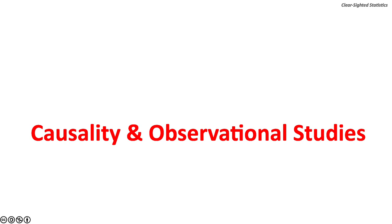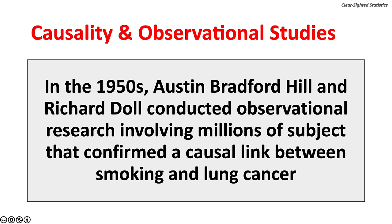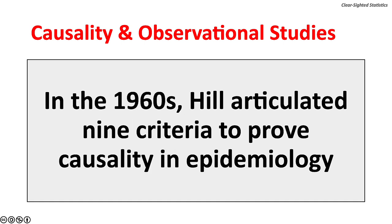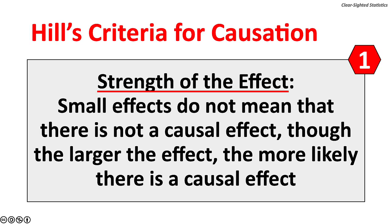In the 1950s, Austin Bradford Hill and Richard Doll conducted observational research involving millions of subjects that confirmed a causal link between smoking and lung cancer. In the 1960s, Hill articulated nine criteria to prove causality in epidemiology. First, strength of the effect — small effects do not rule out a causal effect, though the larger the effect, the more likely there is causation. Second, reproducibility — consistent findings observed by different researchers in different places with different samples strengthen the likelihood of a causal effect.